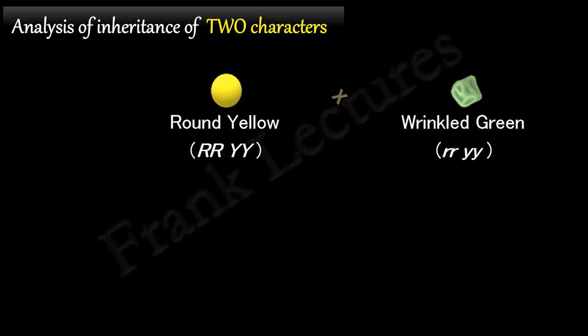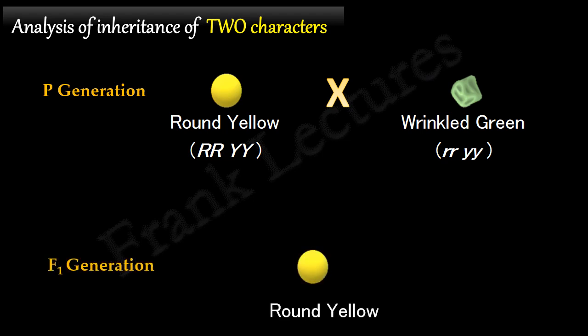Mendel crossed these two pea varieties differing in two characters. So this is our P generation. In the F1 generation, he obtained all plants with round yellow seeds.